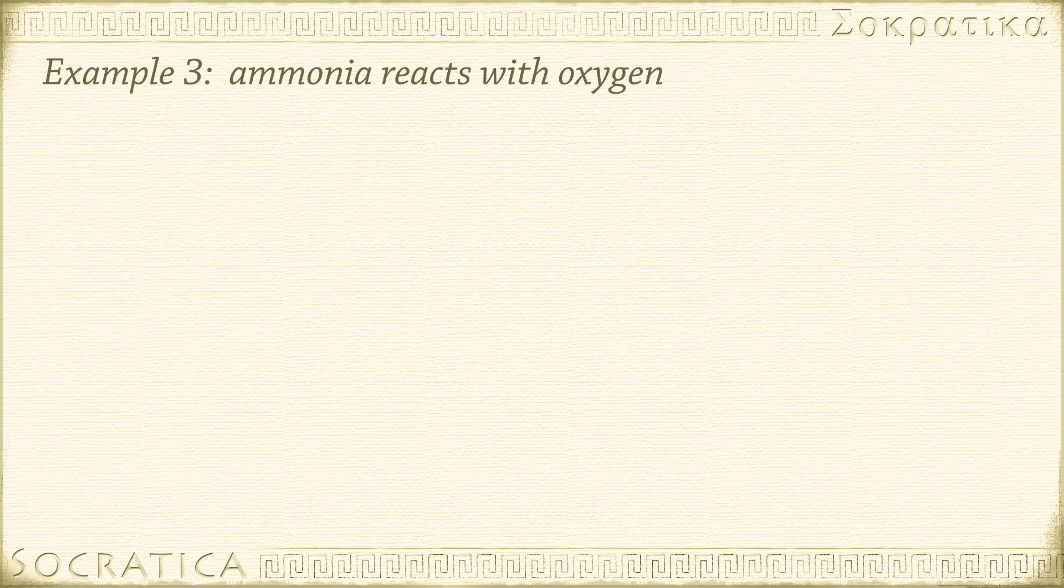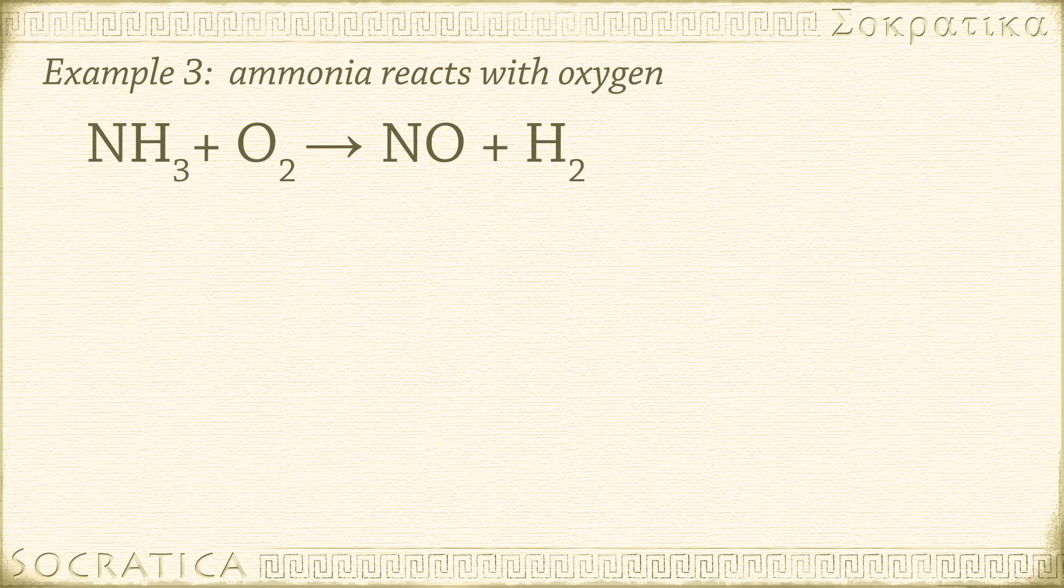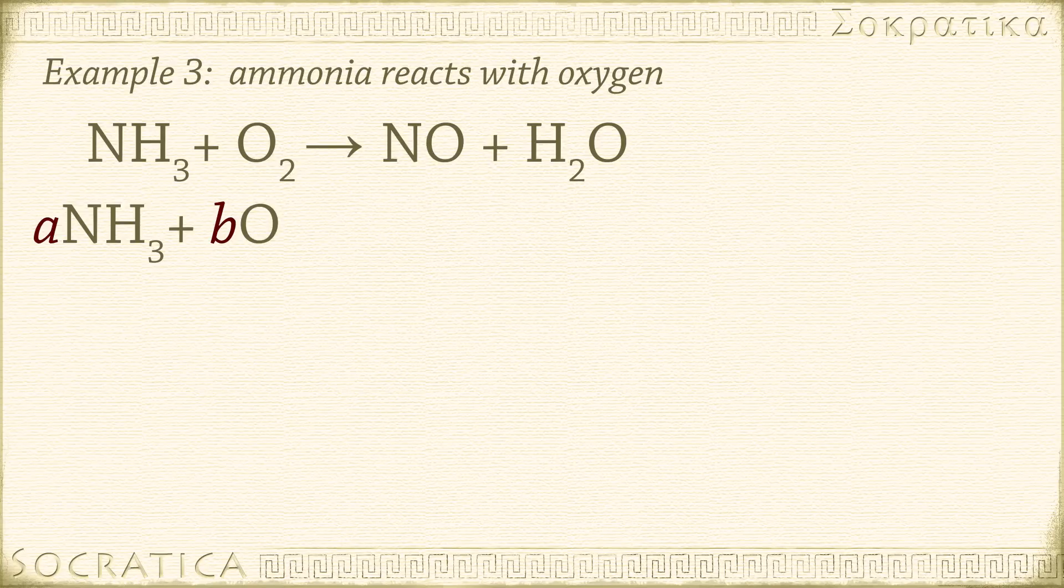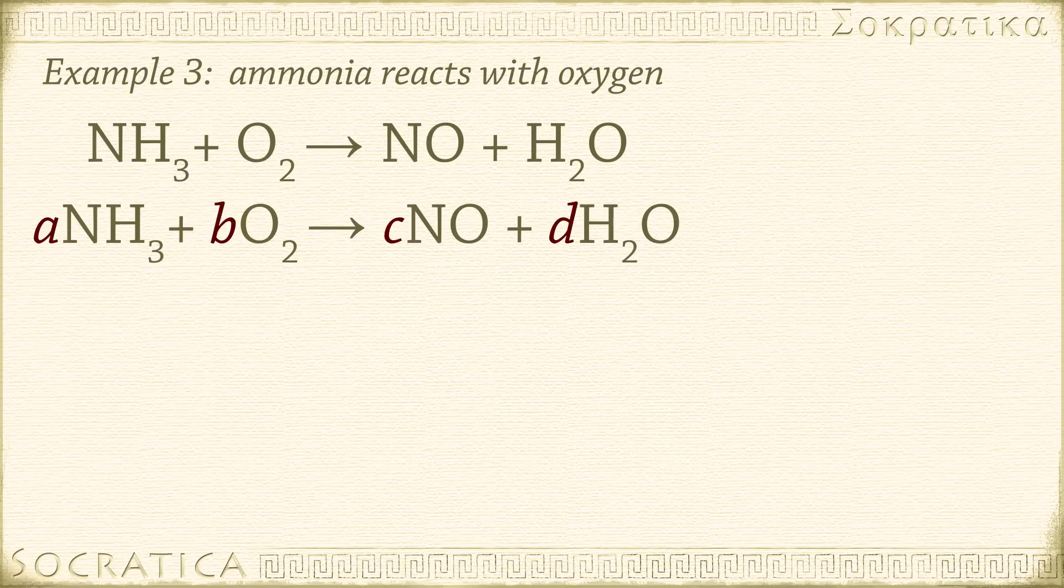Here's our third example. Ammonia reacting with oxygen. NH3 plus O2 yields NO plus H2O. Now we'll have four coefficients. ANH3 plus BO2 yields CNO plus DH2O. Write out the algebraic relationships we can see from the equation. The number of nitrogen atoms must be equal on both sides, so A equals C. The number of hydrogen atoms on both sides are equal, so 3A equals 2D. Finally, the number of oxygen atoms on both sides must be the same, so 2B equals C plus D. Be careful with that part. See how oxygen is in two places on the right-hand side.